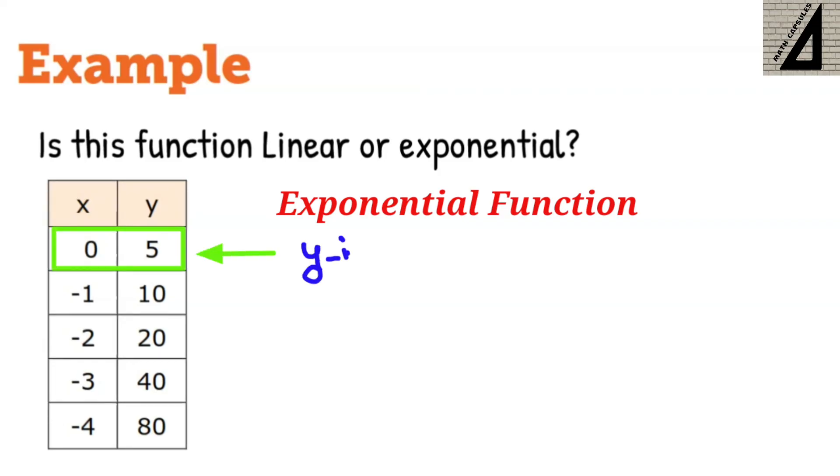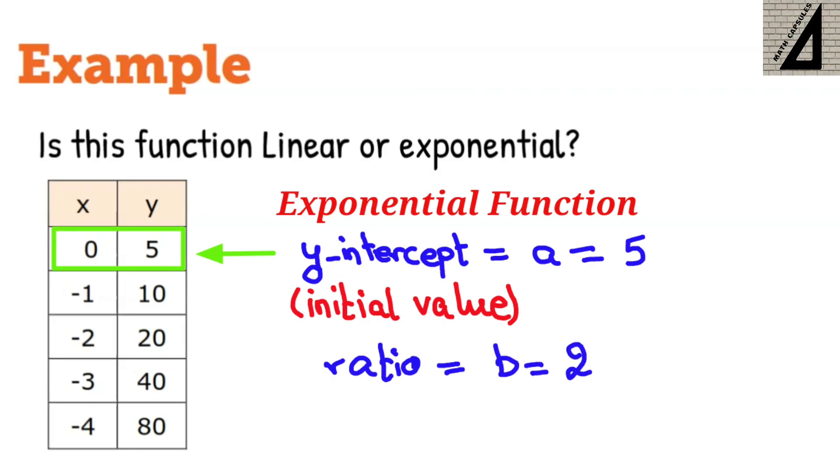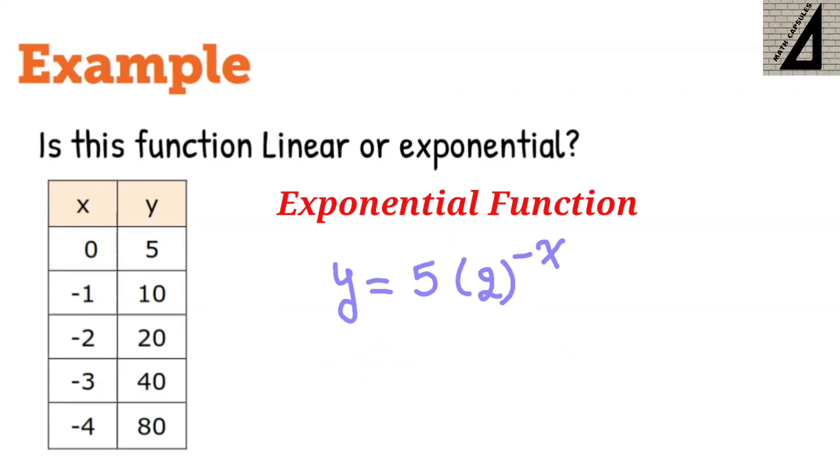The y-intercept or the a value is 5 because this is the point (0,5), so a is 5. While b is the number that is multiplied each time, which is 2, so b is 2 to the power of negative x.